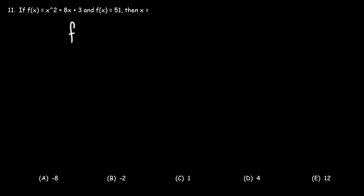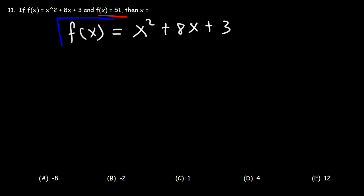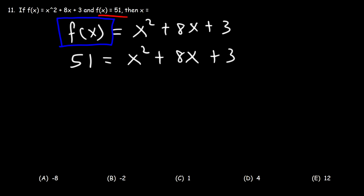So first, let's rewrite the function just to get things started. We're told that f of x is equal to 51, so let's replace f of x with 51. We're going to have 51 is equal to x squared plus 8x plus 3.